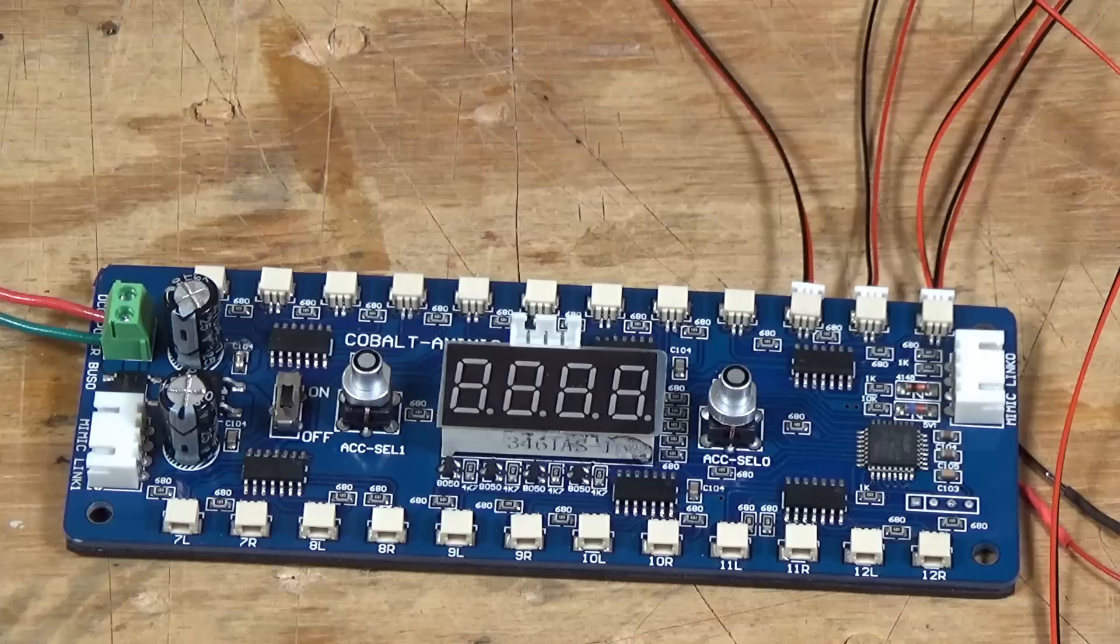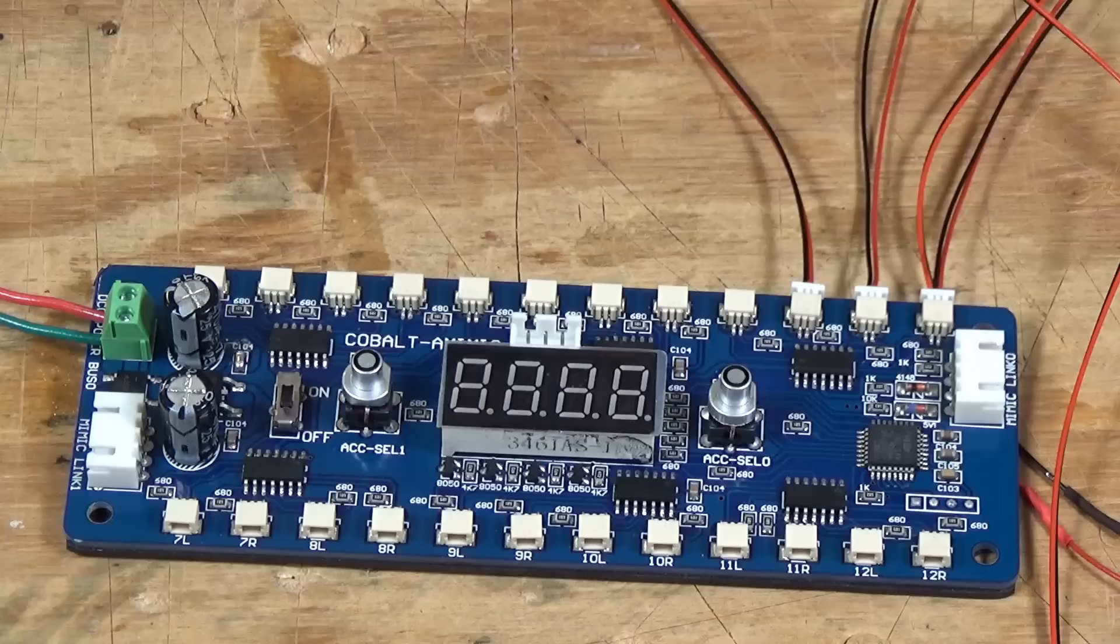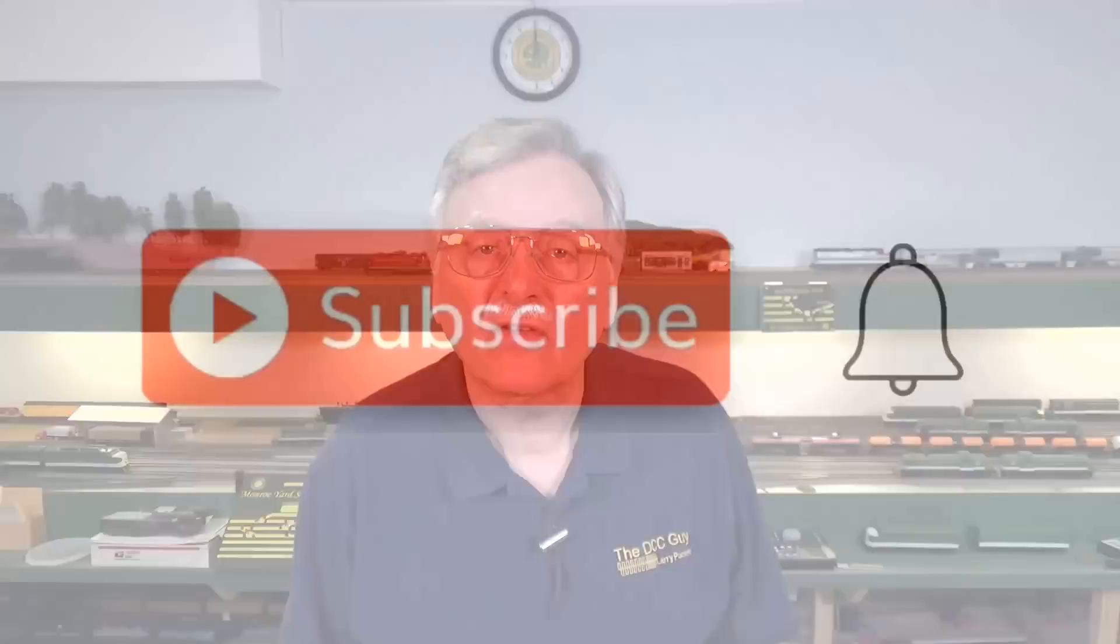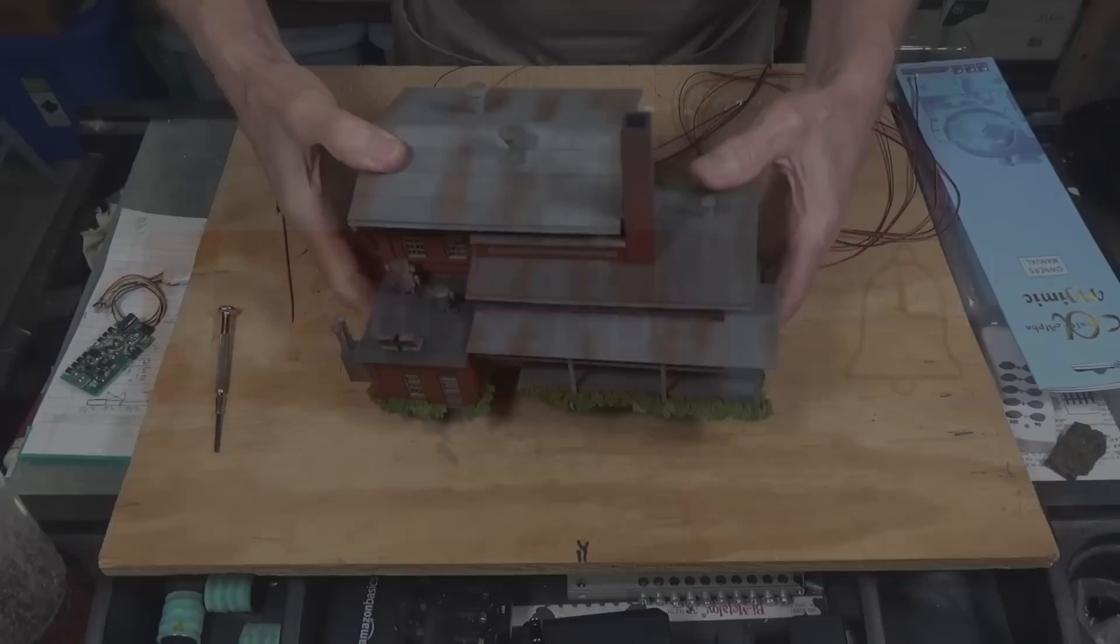What I want to do now is let's install these lights in one of my structures from the module. I'm going to use the Gasworks because that's fairly easy to get to and work with. Before we go on, I want to ask you to take a moment to subscribe to the channel. It's simple, easy, and free. All you have to do is hit that little red subscribe button, and when the little bell comes up, click on it and click all.